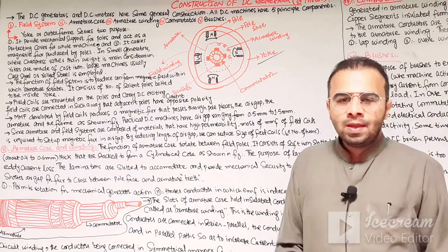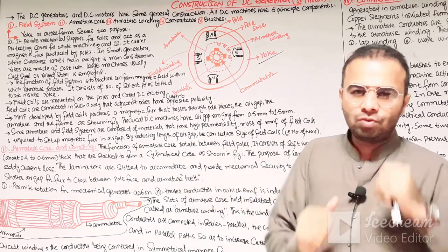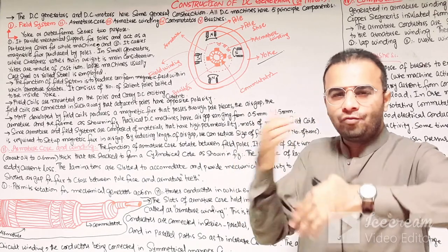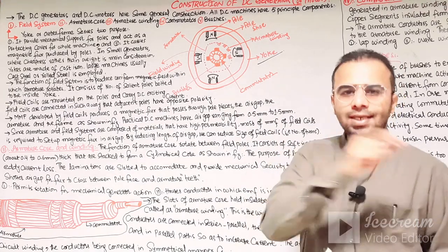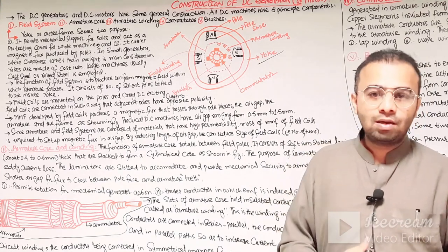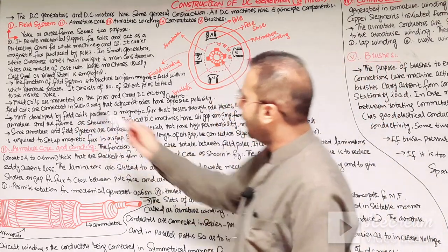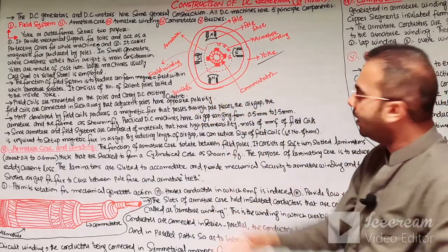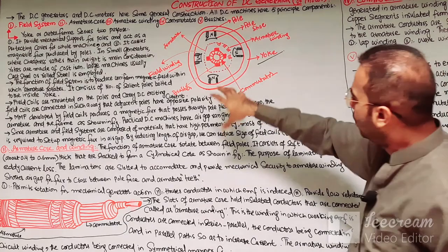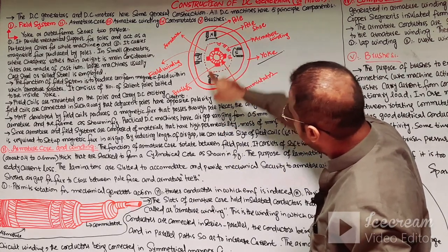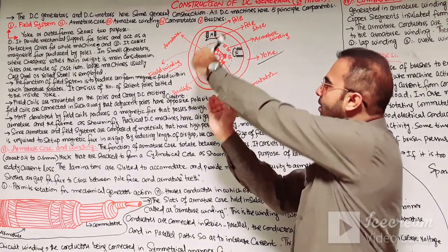In the case of a separately excited DC generator, the field coils are excited by an external DC source and the armature is rotated by a prime mover. The rate of change of flux linkage d-phi/dt induces an EMF in the coil according to Faraday's law of electromagnetic induction. The field coils are mounted on the poles, carry DC exciting current, and are connected such that adjacent poles have opposite polarity.